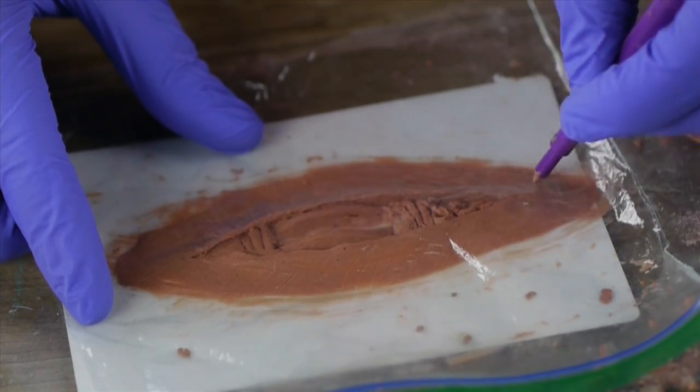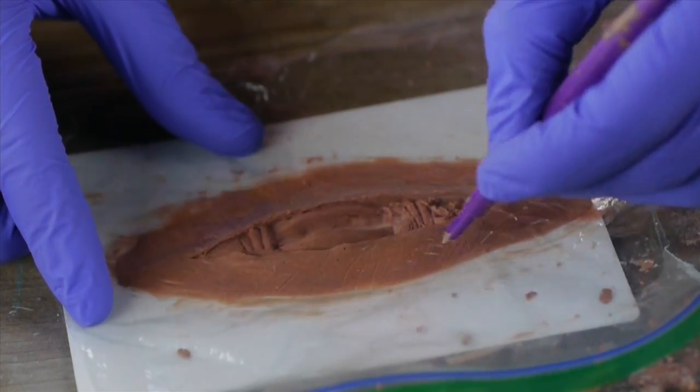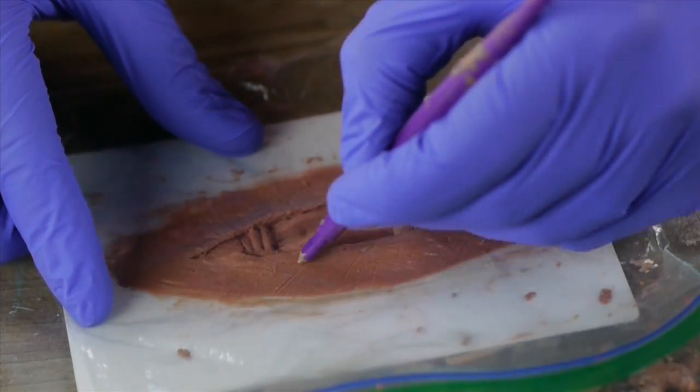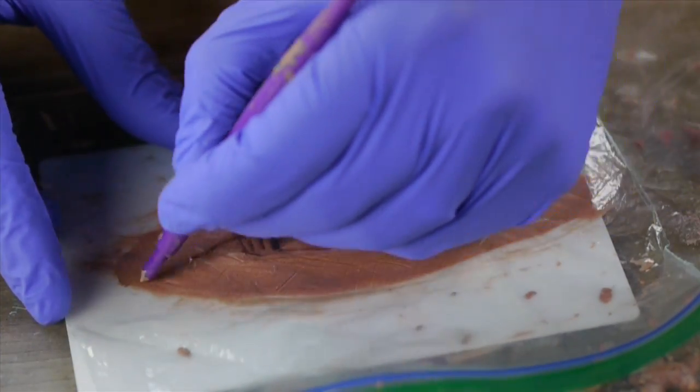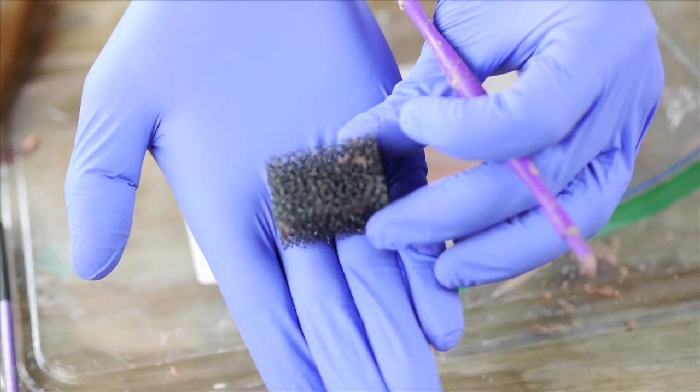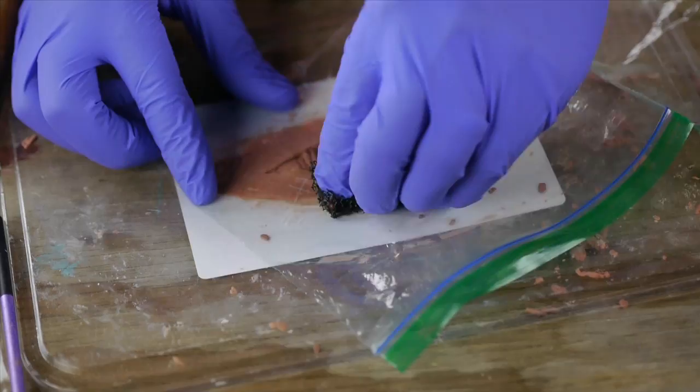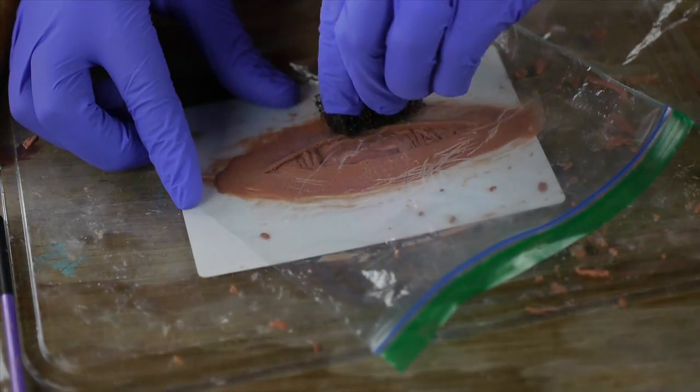For the next series of details, I use an even thinner barrier of plastic. I'm repeating the same process, but adding some more details with the tip of this tool. Be sure to extend every detail up to the very edge of the piece.